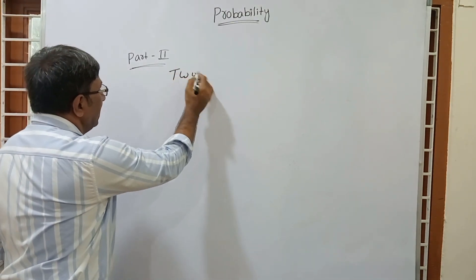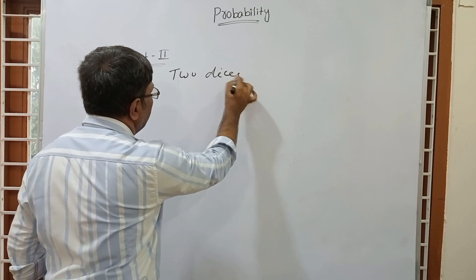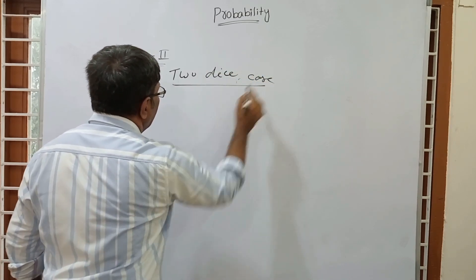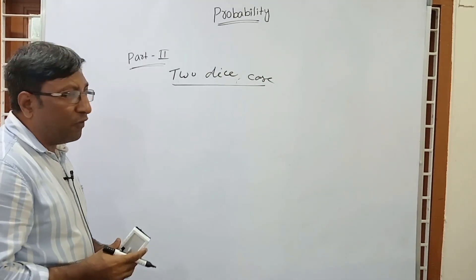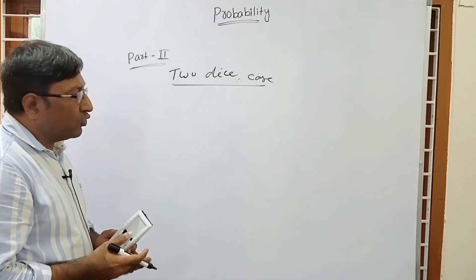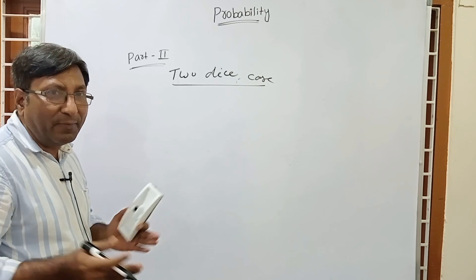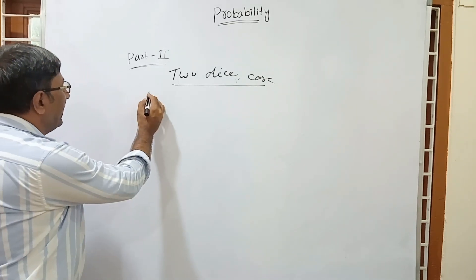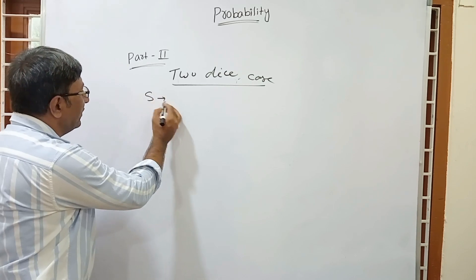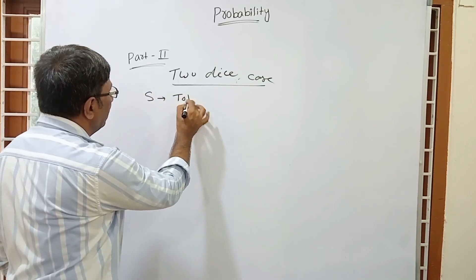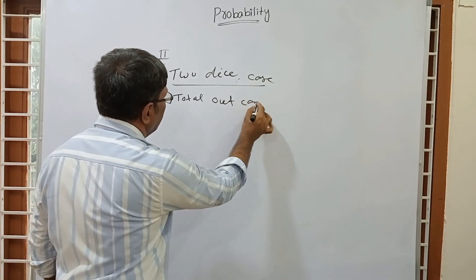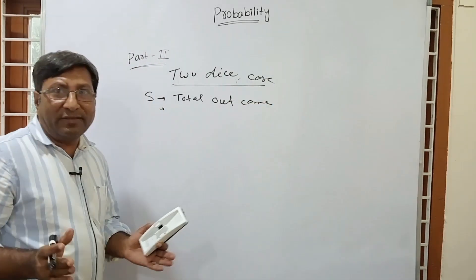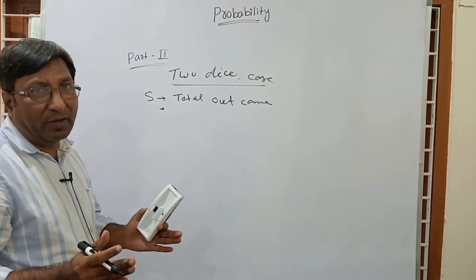Suppose there is a 2-dice case. If there are 2 dice, then what is the probability? First we will find how many outcomes are in the sample space when there are 2 dice. Sample space S means total outcomes, so when we throw 2 dice, what is the total outcome?